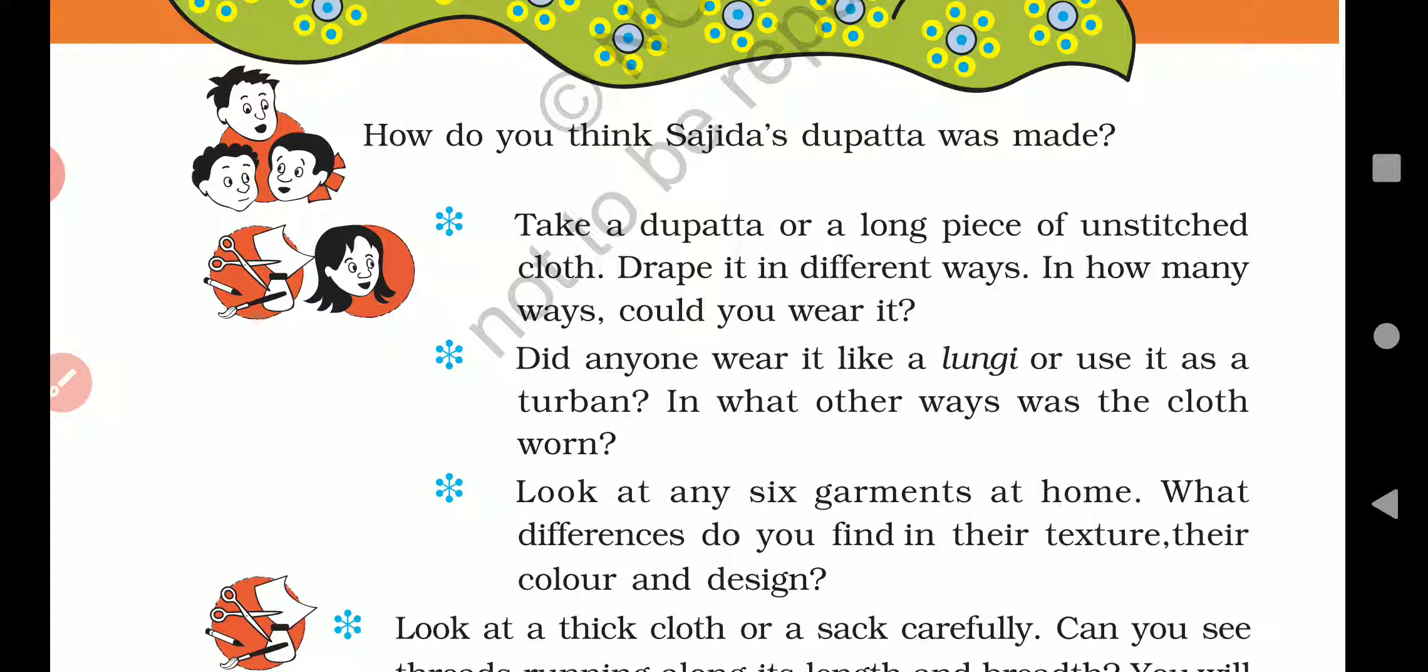So now it tells you how Sajida's dupatta was made. Sajida's dupatta is made of cloth, kapde. And how is it made? Weavers have made it - those who do weaving. Or with the help of machine, or by hand, they did embroidery on it, or stuck mirrors on it. So this is how dupattas are made.